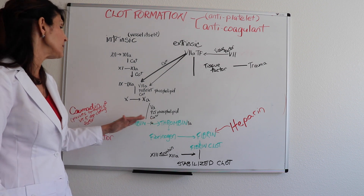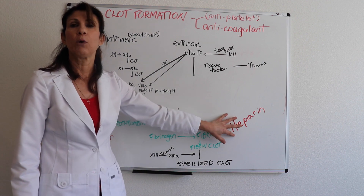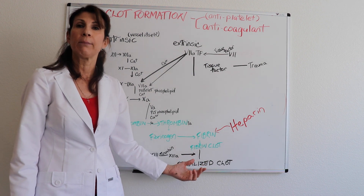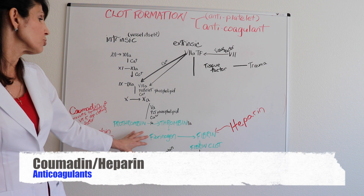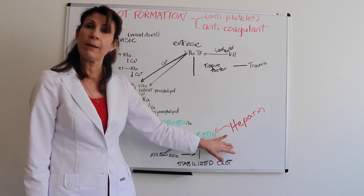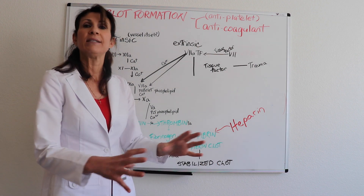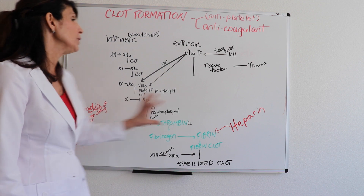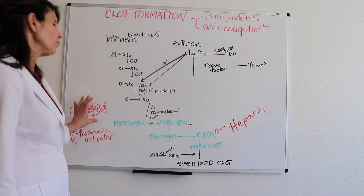Coumadin and heparin work in different places in the common clotting pathway. When we give heparin, we're actually interrupting the conversion of fibrinogen to fibrin, so that fibrin clot can never form with heparin.